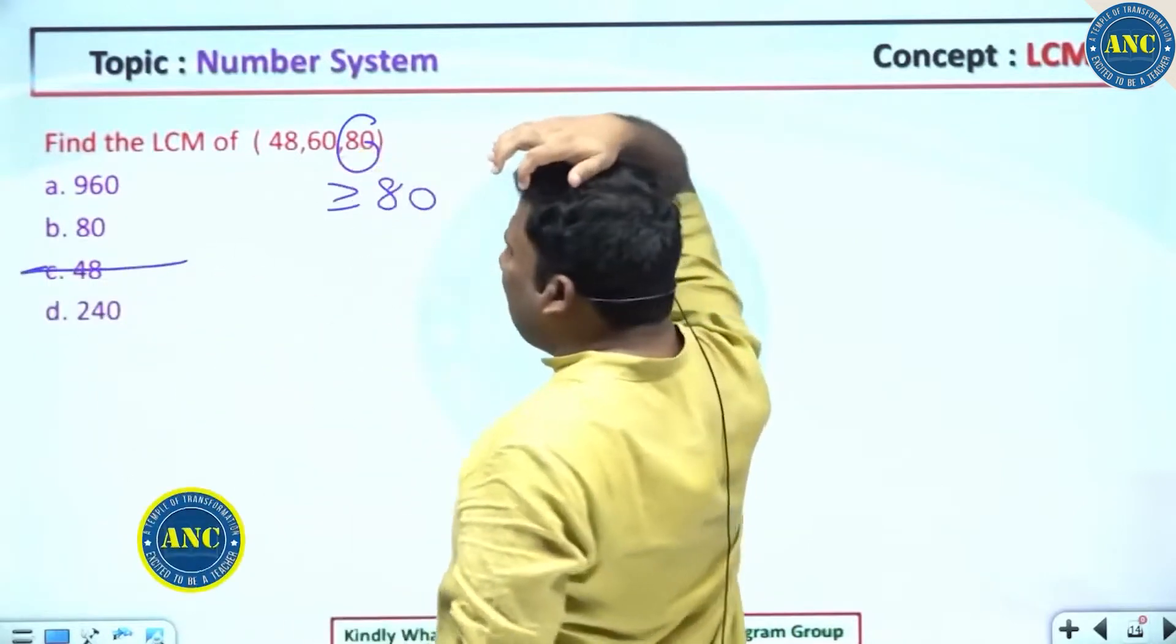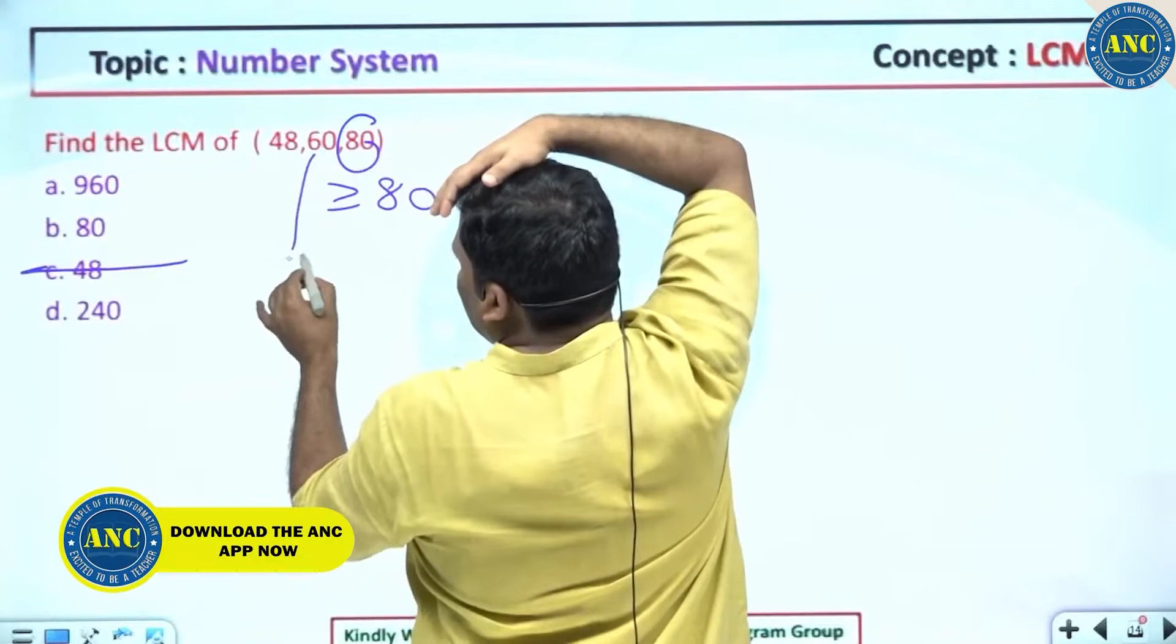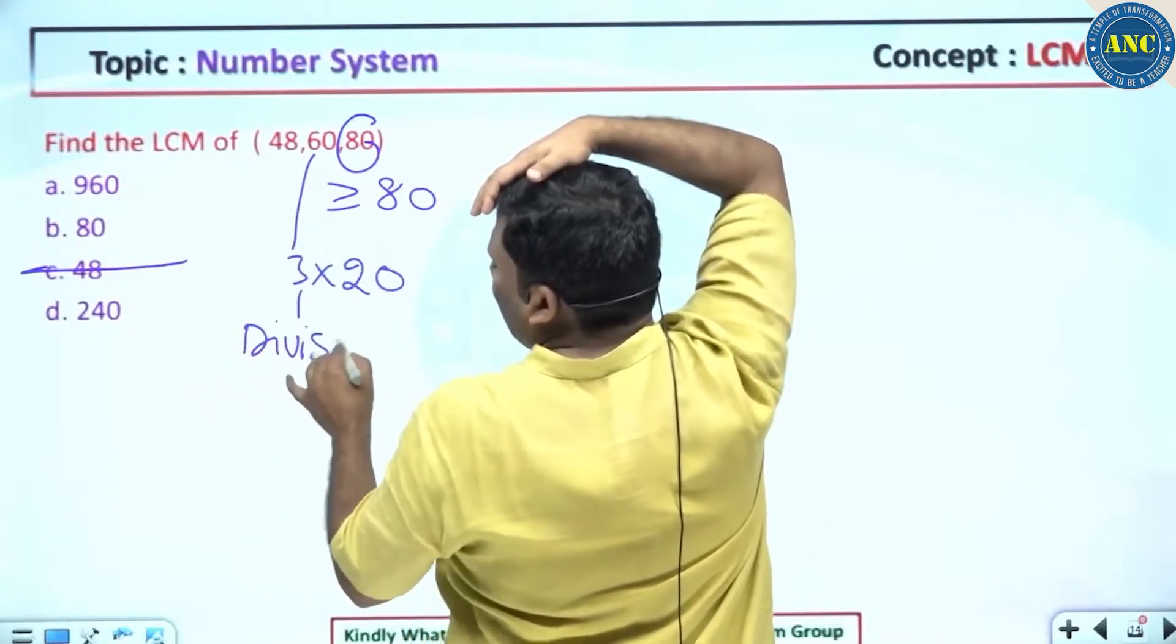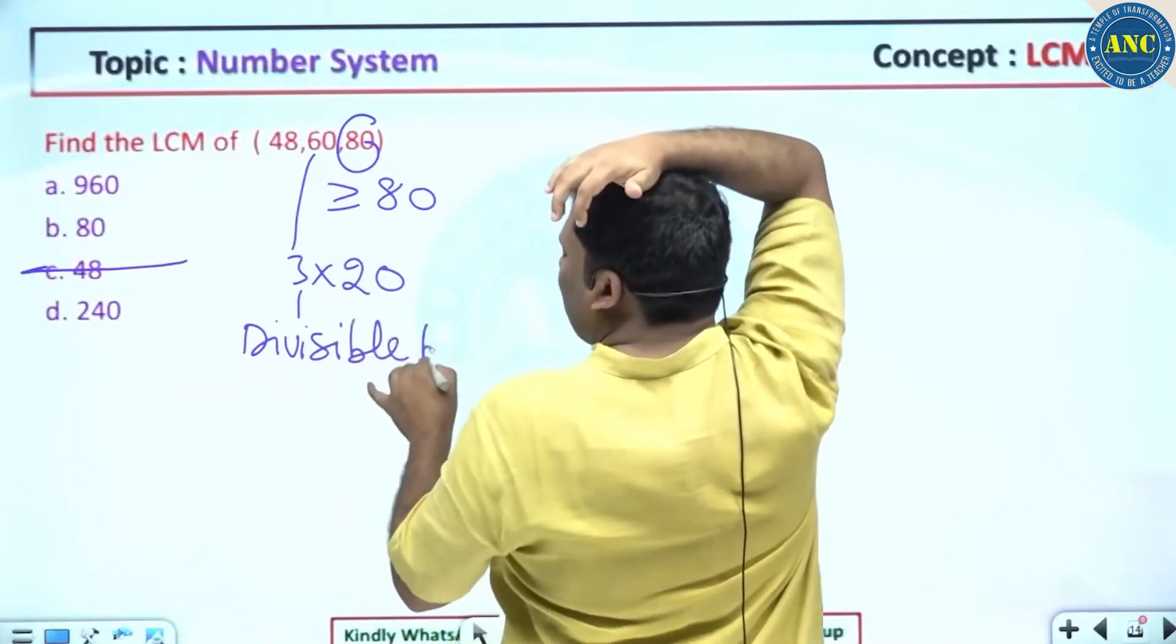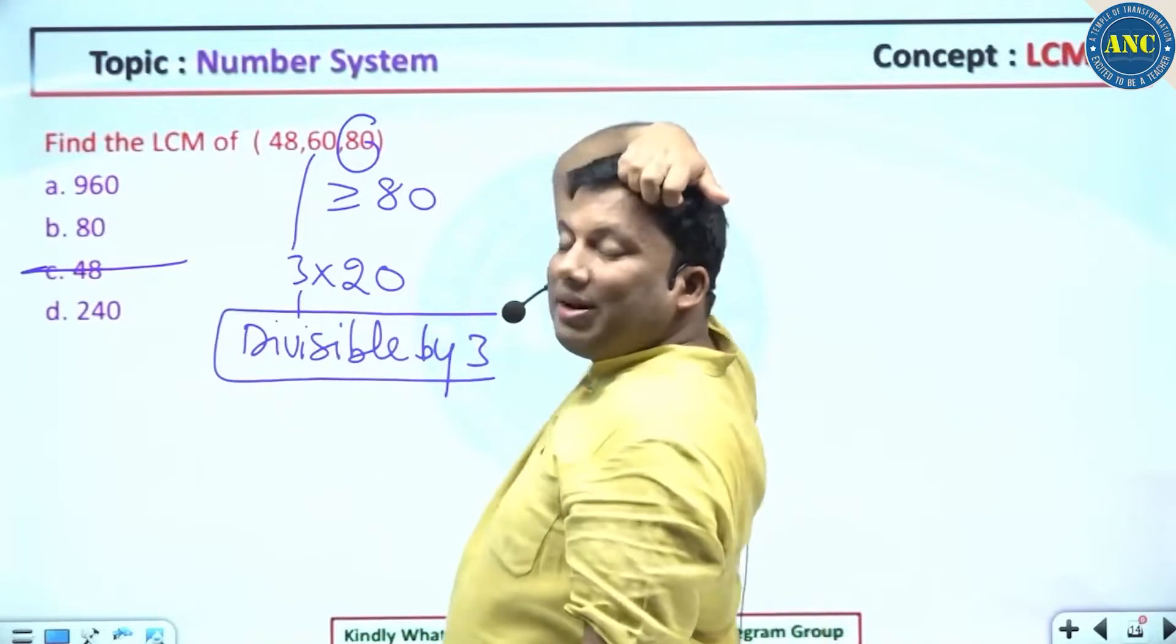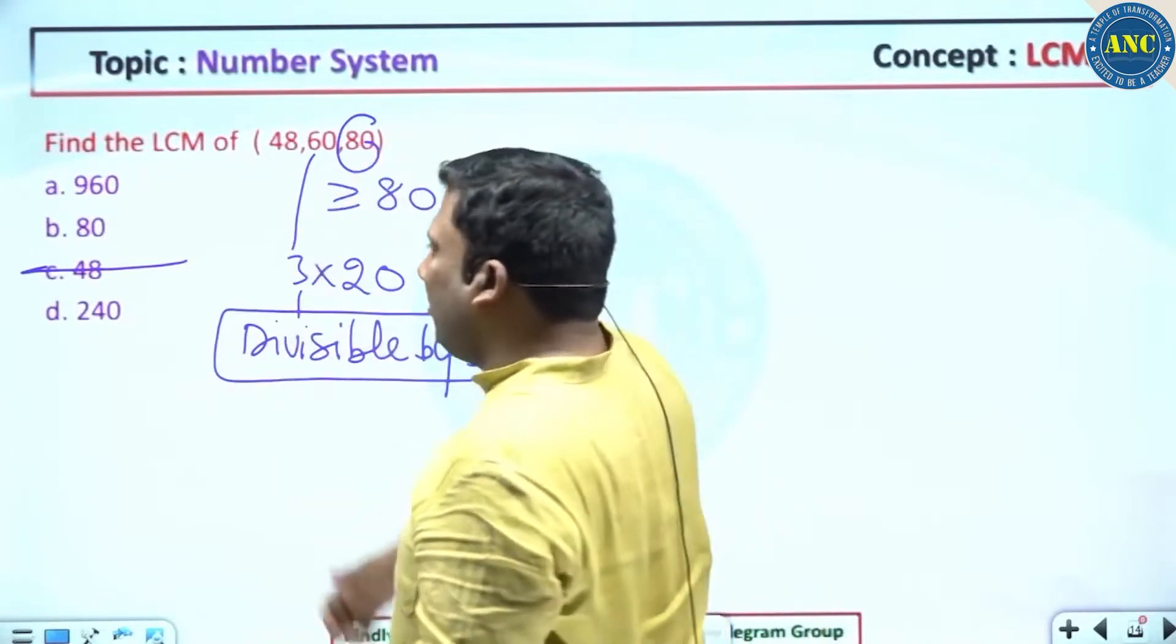48 is out. It cannot be 60. The answer should be divisible by 3. The divisibility rule of 3 is: sum of the digits should be divisible by 3.